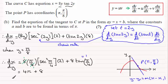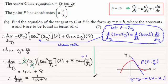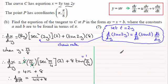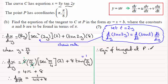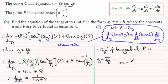Therefore dy/dx must be the reciprocal of this, so dy/dx equals 1 divided by (4π + 8). That's our gradient m. Now for the equation of the tangent at P, using the form y minus y₁ equals m times (x minus x₁): y minus π/8 equals 1/(4π + 8) times (x minus π).